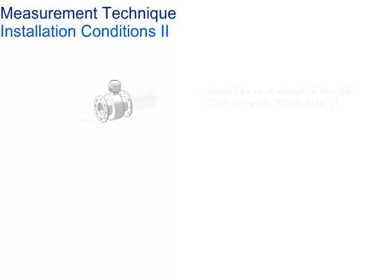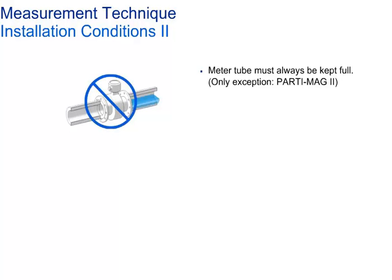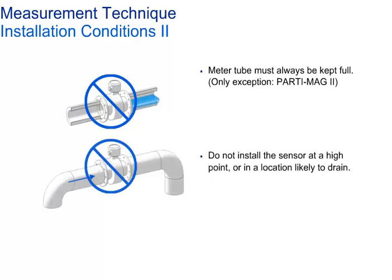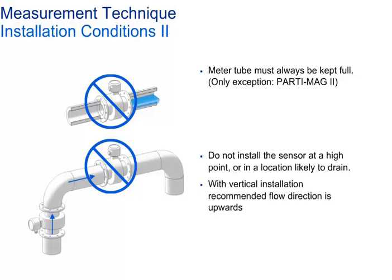Observe the following installation recommendations to ensure proper operation of your meter. The pipe needs to be kept full — the only exception is the ABB PartialMag model, which is designed for wastewater applications with partially filled pipes. Do not install the sensor at the highest point or on the draining-off side of the pipeline, as the sensor may run partially filled due to air at the highest point. With vertical installation, the recommended flow direction is upwards.